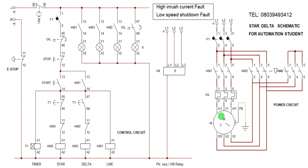The motor is supposed to receive power through two paths when working on delta, and through one end with the star bridging when working on star. If the star end is not bridged, the delta power shouldn't come through. If the star contactor is not closed, power shouldn't pass through to the motor. To rectify this issue, we need to create an auxiliary branch in the control circuit.